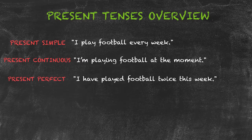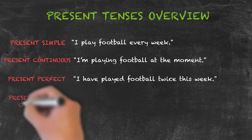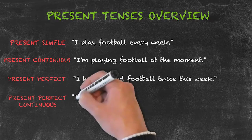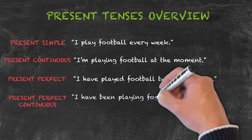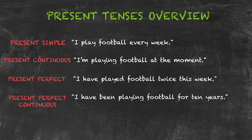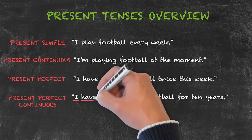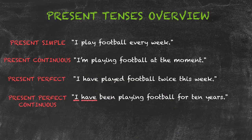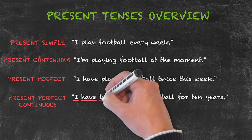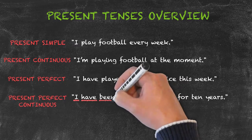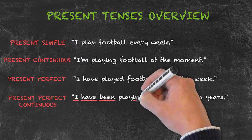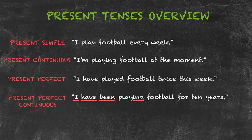Our final present tense is the present perfect continuous tense. Our example sentence here is 'I have been playing football for 10 years,' which has the structure: subject plus auxiliary verb 'have' or 'has,' then a second auxiliary verb — here 'been' — plus verb-ing: 'I have been playing.'